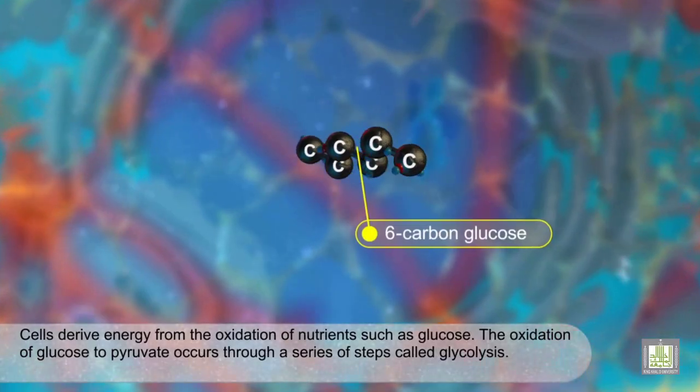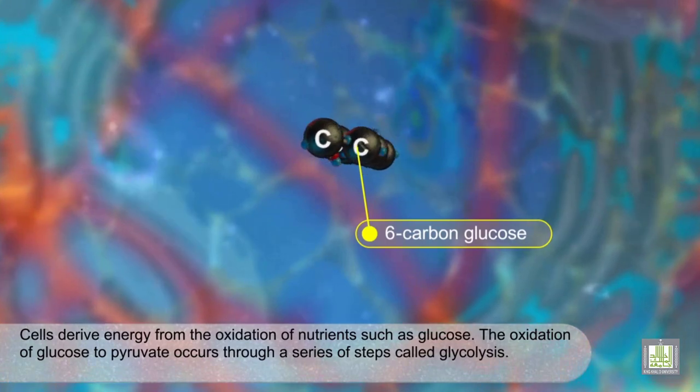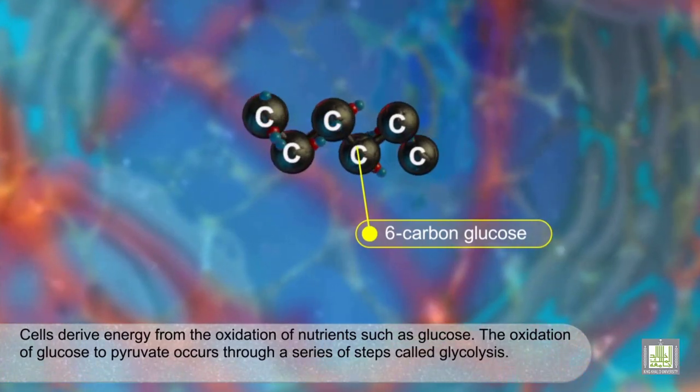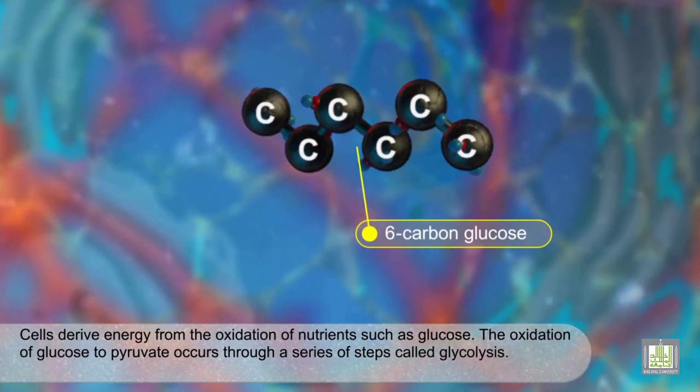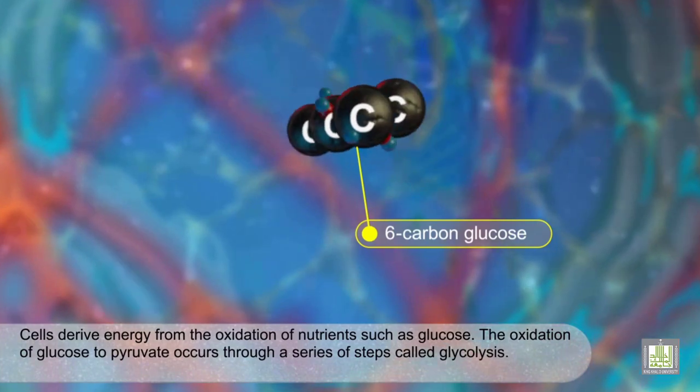Cells derive energy from the oxidation of nutrients such as glucose. The oxidation of glucose to pyruvate occurs through a series of steps called glycolysis.